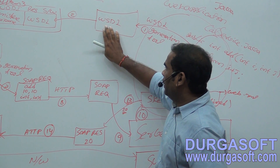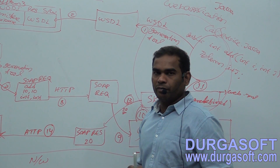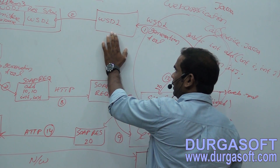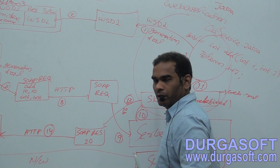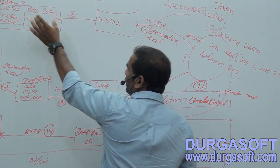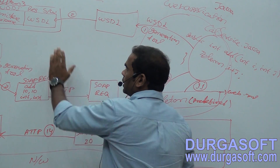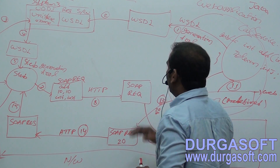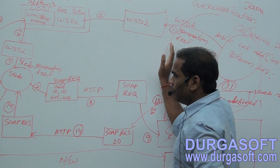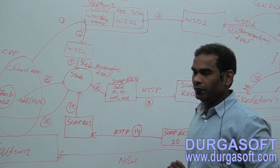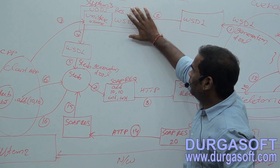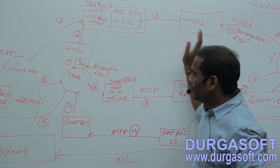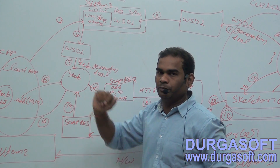This WSDL file needs to be shared with the client. The service provider can either send the WSDL file through an email attachment, or store this WSDL file into the UDDI registry software with some unique name and share that unique name with the client. So instead of storing the WSDL file into the UDDI registry, we can also directly share the WSDL file to the client through an email attachment.